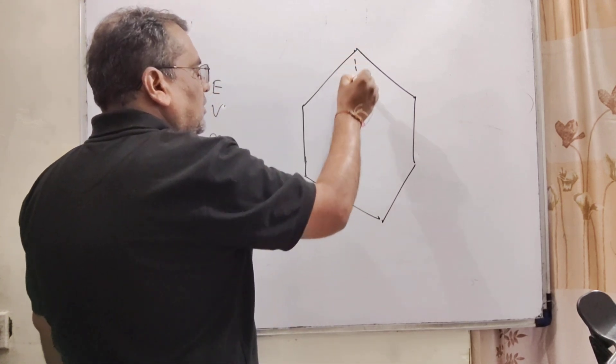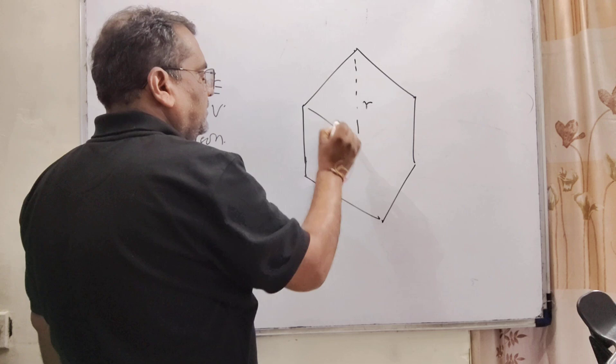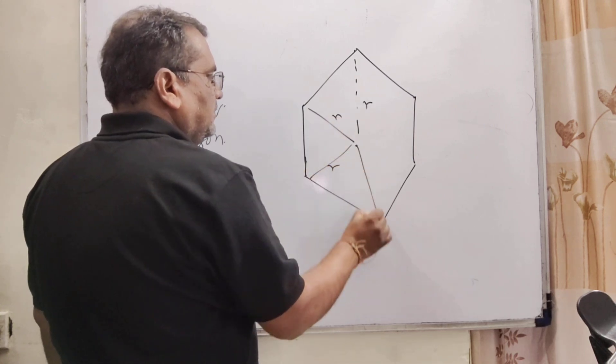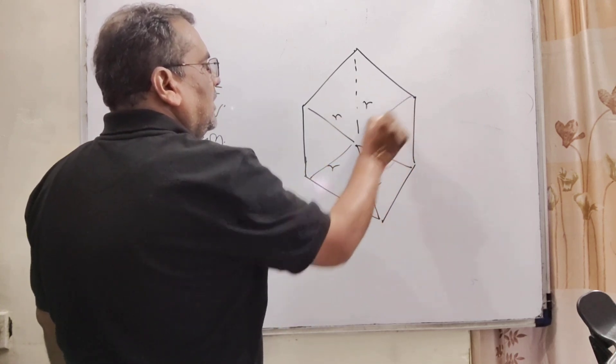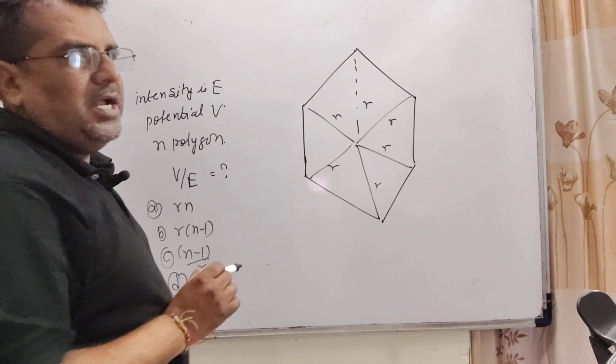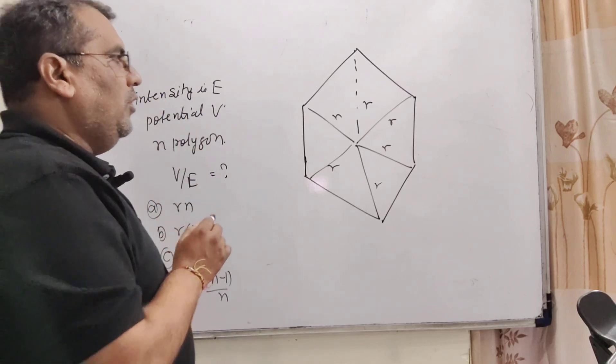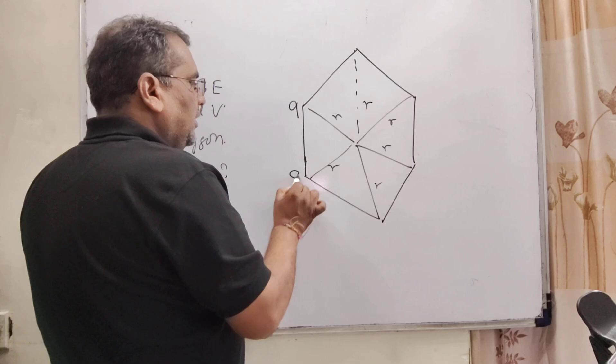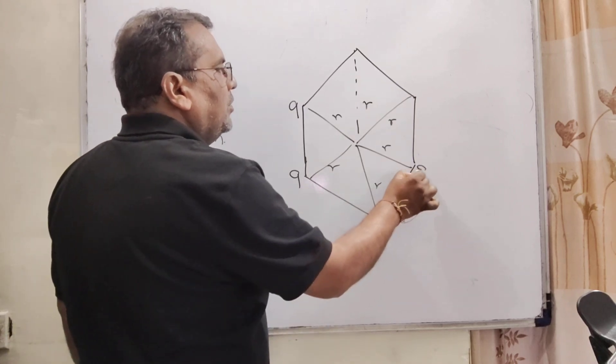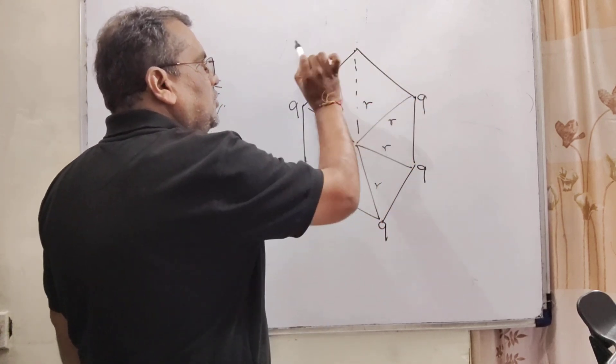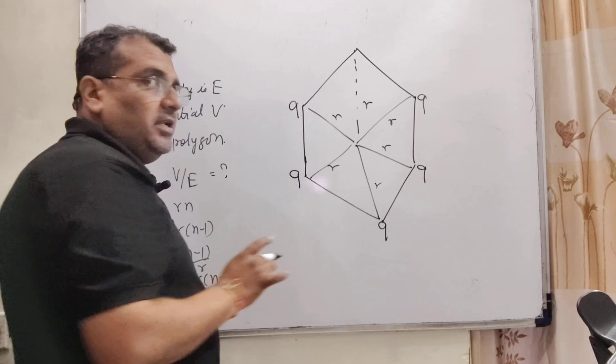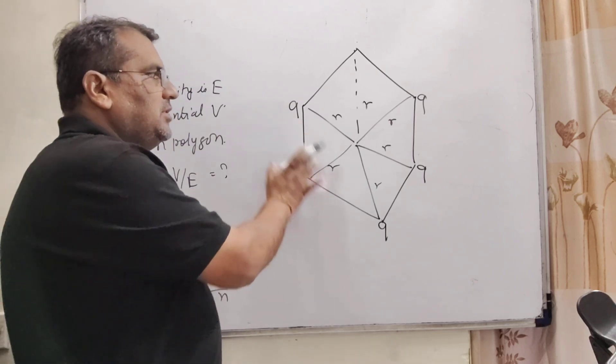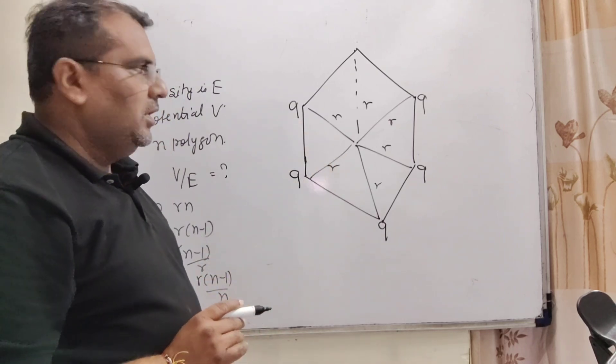And the distance from all the corners that is r. And in this question, the charge is on n minus 1. It means here is the charge q, q, q, q, q, q and here is no any charge. Because n minus 1 corners that is charge, equal charge that is q.